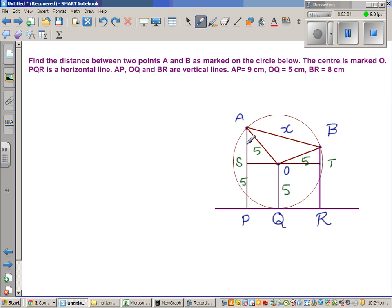If SP is 5 and AP is 9, AS would be 4. In the same way, BR is 8 and TR, if OQ is 5, TR would also be 5. So this is 8, so this has to be 3.